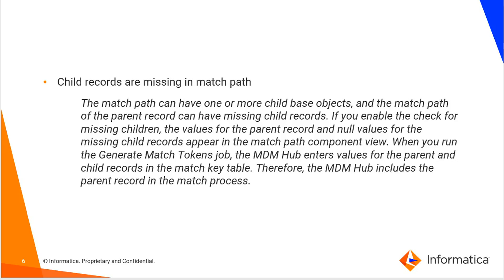Scenario 2 is when child records are missing in the match path. The match path can have one or more child base objects, and the match path of the parent record can have missing child records. If you enable the check for missing children, the values for the parent record and null values for the missing child records appear in the match path component view. When you run the generate match tokens job, the MDM hub enters values for the parent and child records in the match key table, and therefore includes the parent record in the match process.